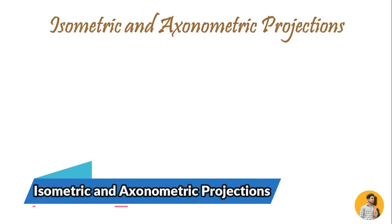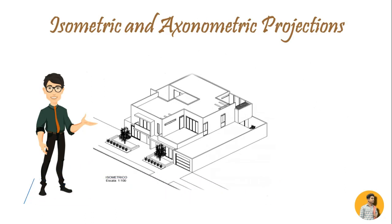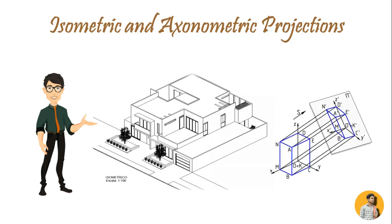Isometric and axonometric projections are a simple way of representing a three-dimensional object. An isometric uses a plan grid at 30 degrees from the horizontal in both directions, which distorts the plan shape. An axonometric uses a 45-degree plan grid, which keeps the original orthogonal geometry of the plan.